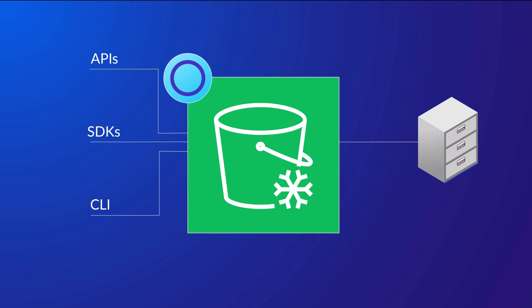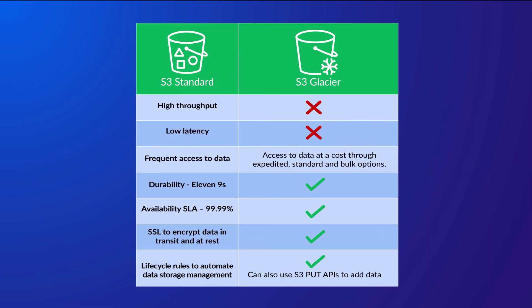Now let me review the two S3 Glacier storage classes. Firstly, S3 Glacier. This is the default standard storage class within S3 Glacier, offering a highly secure — with in-transit and at-rest encryption — low-cost and durable storage solution. The durability matches that of other S3 storage classes, being 11 nines across multiple availability zones, and the availability of S3 Glacier is 99.9%. It's simple to add data using the S3 PUT APIs in addition to S3 lifecycle rules. It offers a variety of retrieval options depending on how urgently you need the data, each at a different price point: Expedited, Standard, and Bulk.